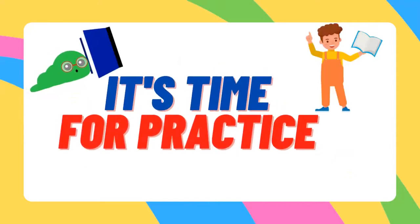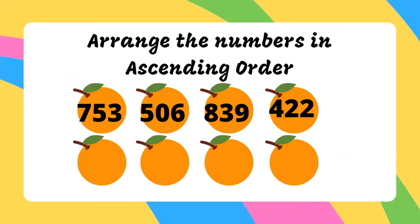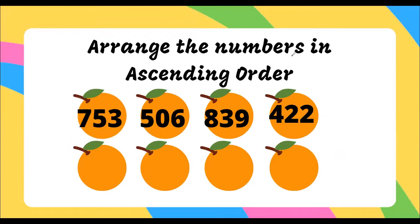It is time for practice now. Arrange the numbers in ascending order — that means from small to big. Can you tell me which number out of these is the smallest? I have already taught you how to compare numbers; if you've forgotten, click the link on screen to watch that video again. The smallest number out of these four is 422.